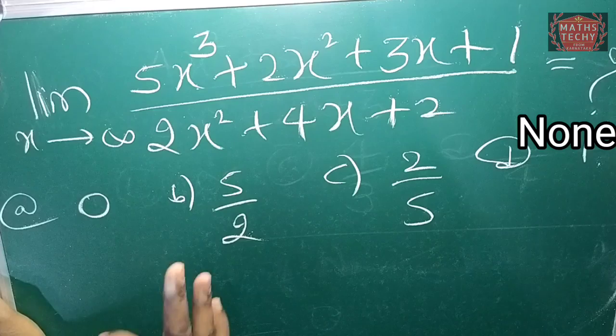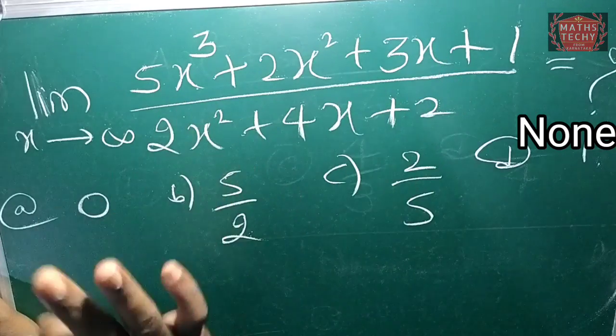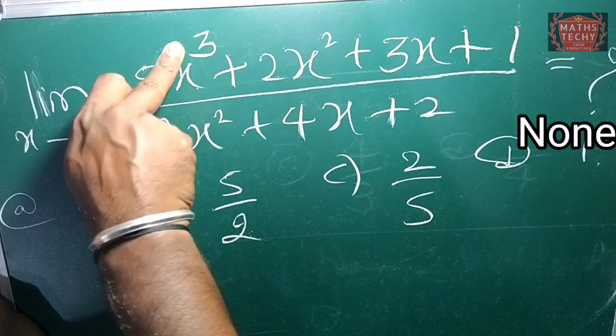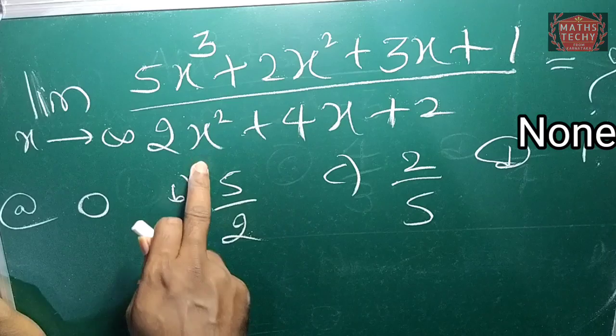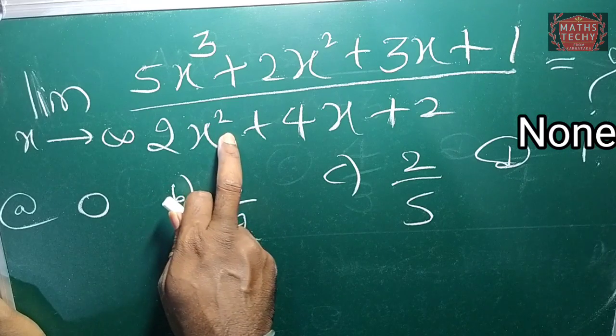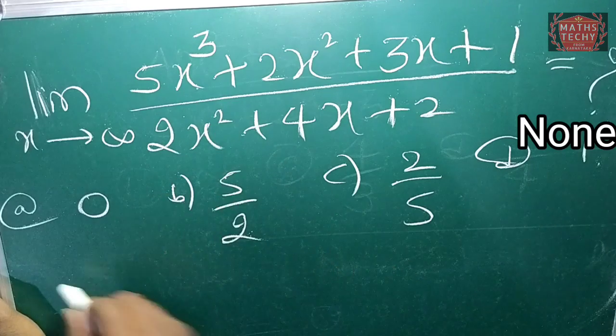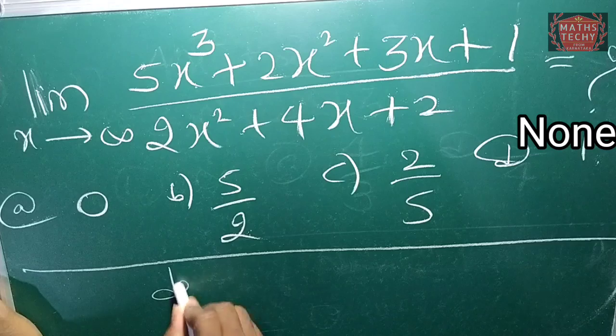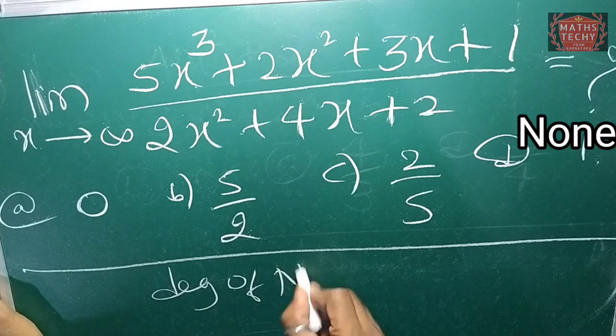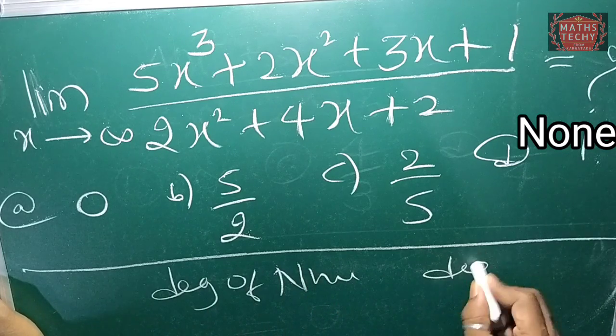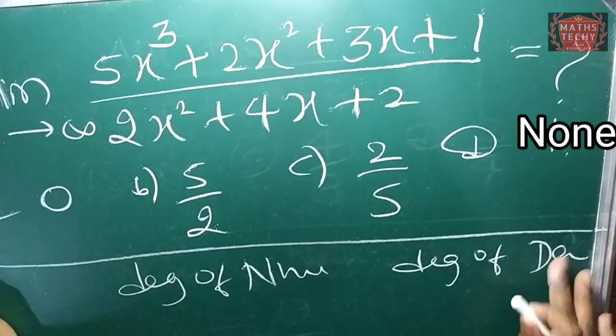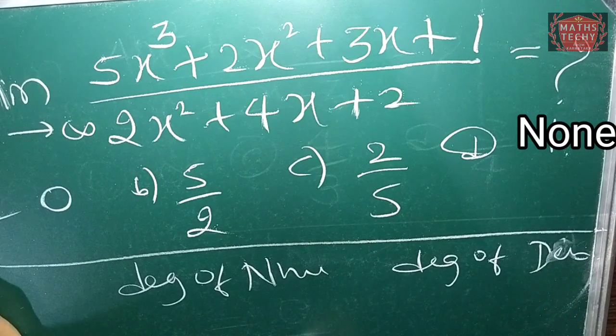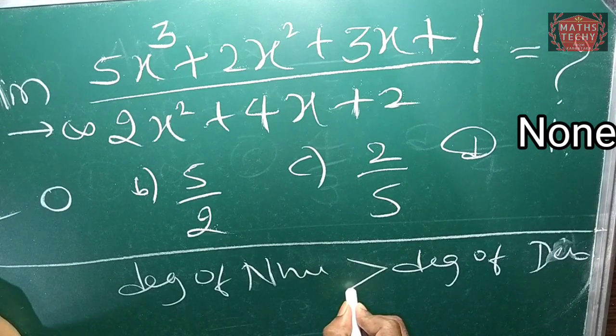Now for the third type of problem: The numerator's degree is 3, but the denominator's degree is 2. Compare them: the degree of numerator is greater than the degree of denominator.